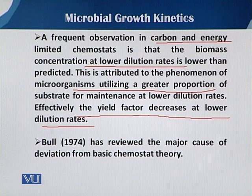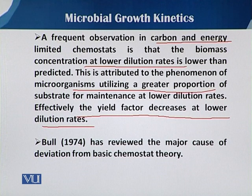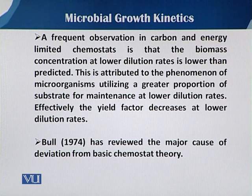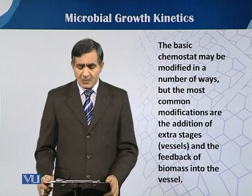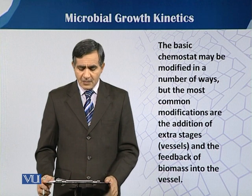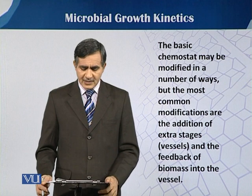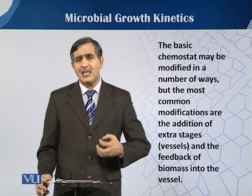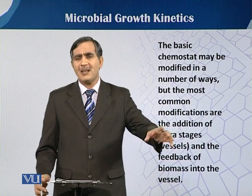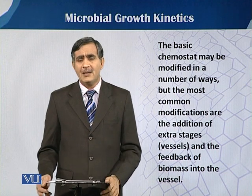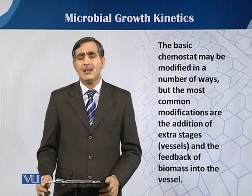Bull (1974) reviewed the major causes of deviation from the basic chemostat theory. While chemostat theory assumes a very steady state by controlling the dilution rate, there are major deviations from that. The basic chemostat theory may be modified in a number of ways, but the most common modifications are the addition of extra stage vessels and the feedback of biomass into the vessel — for example, using multi-chamber fermentation vessels to avoid anomalies or deviations in chemostat culture.